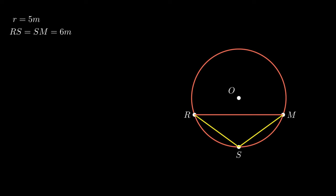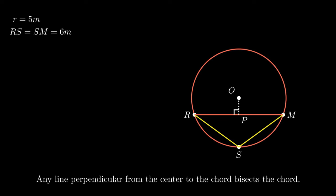To find the length of segment RM, we need to construct a perpendicular from point O to segment RM such that it meets at point P. By using the theorem that any line perpendicular from the center to the chord bisects the chord, we can proceed.